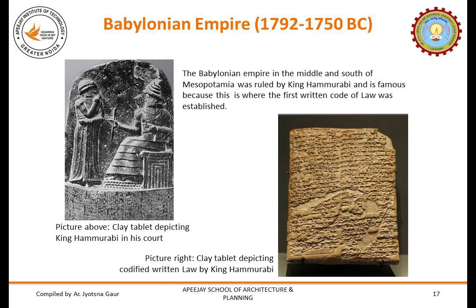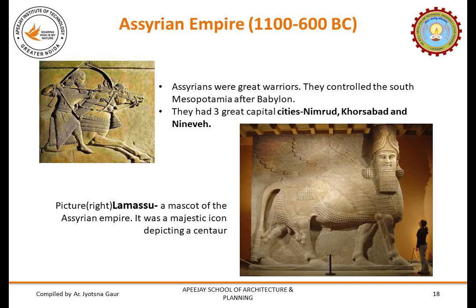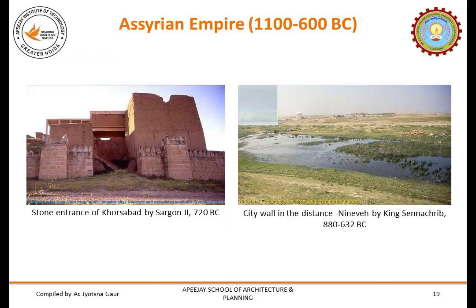Assyrians were great warriors who controlled southern Mesopotamia after Babylon. They had three great capital cities: Nimrud, Khorsabad and Nineveh. A Lamassu — a mascot of the Assyrian Empire — was a majestic icon depicting a centaur, comparable to the Sphinx of Egypt. The stone entrance of Khorsabad city was built by King Sargon II in 720 BC. The city wall of Nineveh was made by King Sennacherib between 880 and 632 BC.